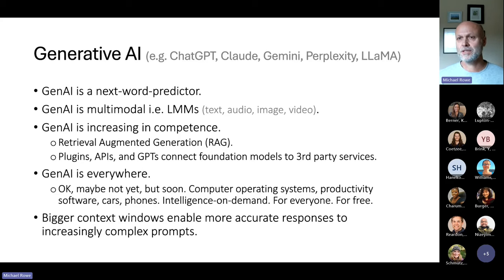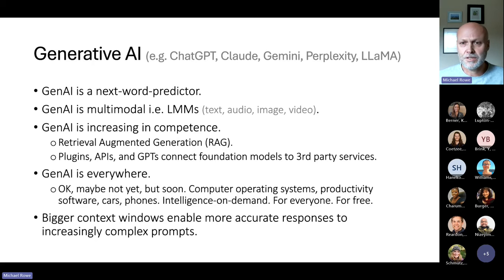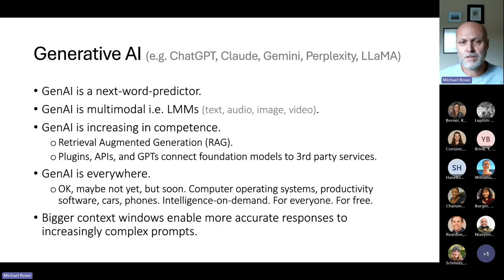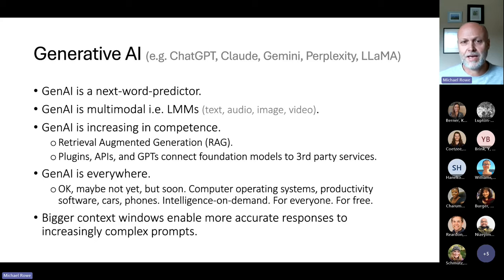Generative AI being a next-word predictor — that hasn't changed. It still is a next-word predictor, and that's all that generative AI does. It takes the prompt you give it, the context you provide, and it just predicts the next word in the sentence, running constant probabilities on what the chances of the next word being X are. This is one of the reasons why they're really bad at counting. If you ask it to give you a paragraph of 50 words, it really struggles because it can only ever see one word ahead — by the time it reaches the 40th word, it has no idea how many words are left.